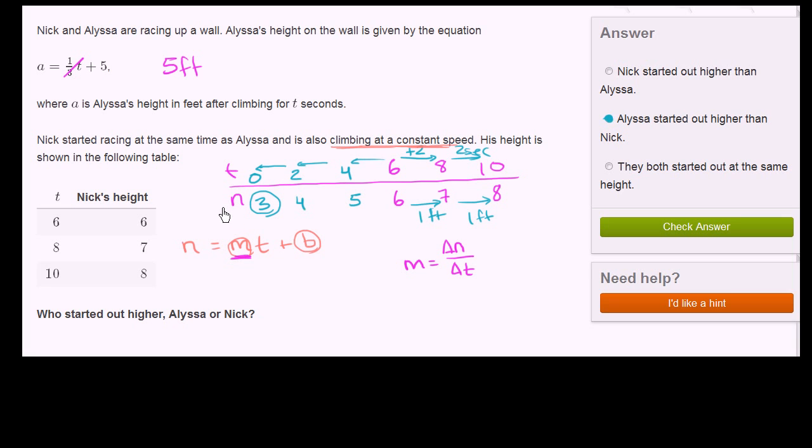And his height, we used the letter n. So we already know that when time increases by 2, his height increases by 1 foot. So we know that m is equal to 1/2. He increases 1/2 feet per second. And you see that there, because it takes him 2 seconds to go 1 foot.